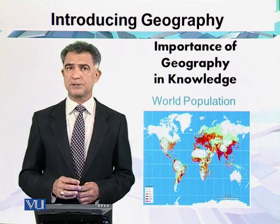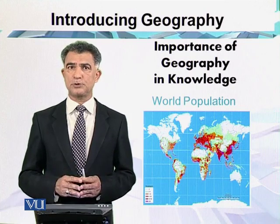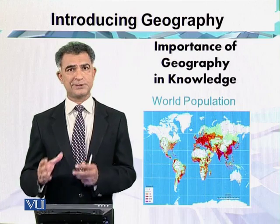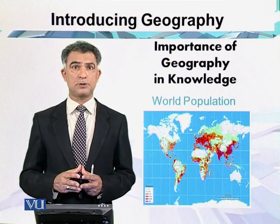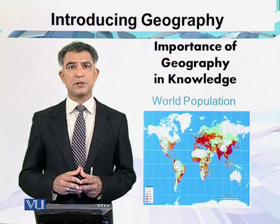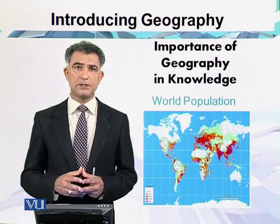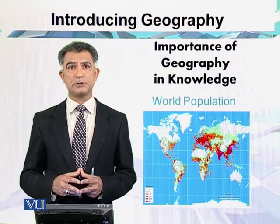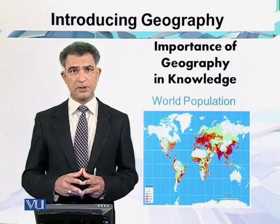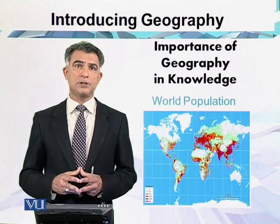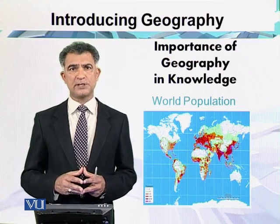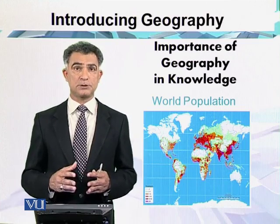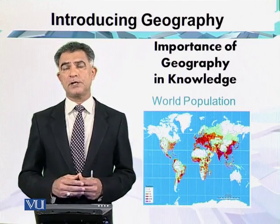Looking at world population, the world's major clusters are found in specific parts of the world. In the Asian continent, most clusters are on the eastern side — China has one of the largest populations in the world. The second most important cluster is South Asia, where India is the second most populous country. Another major cluster is in Europe, with more than 700 million population. The third is North America, and the fourth is the southern continent, including South America, Africa, and Australia.